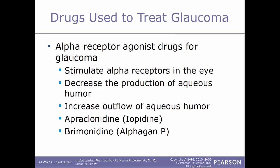Another class of drugs used to treat glaucoma are the alpha receptor agonists. These work to stimulate the alpha receptors within the eye, decreasing the amount of aqueous humor that is produced and also increasing the outflow of aqueous humor. Examples include apraclonidine, sold under the name Iopidine, and also brimonidine, sold under the name Alphagan-P.